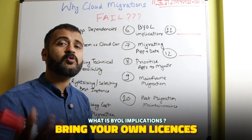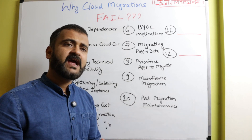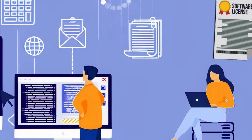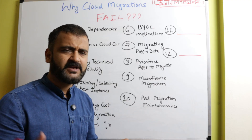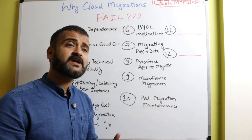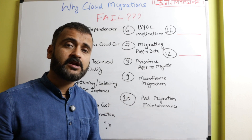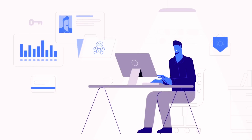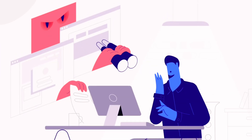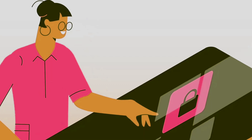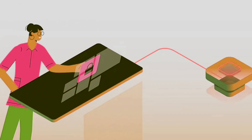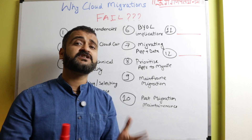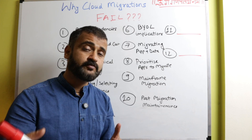The sixth reason is BYOL — Bring Your Own License — implications. Many enterprise companies own private licenses of different software, for example Oracle, SQL Server, and similar applications, and they assume they can simply take those licenses onto the cloud. But there are complications, restrictions, and legalities involved wherein a certain vendor might not allow you to use their license on the cloud, which could completely derail your cloud migration. That's why you have to understand what kind of licenses you have and how you could ship those to cloud, or whether you would have to purchase new ones.